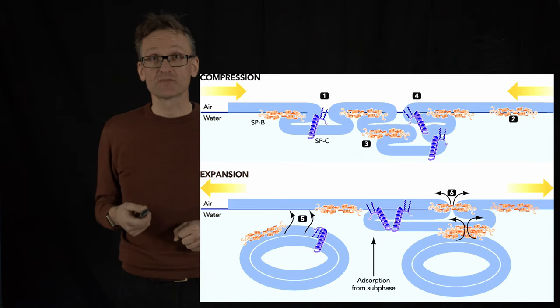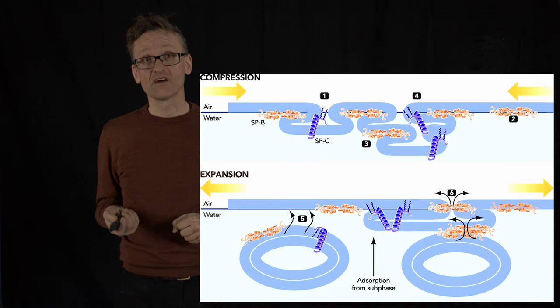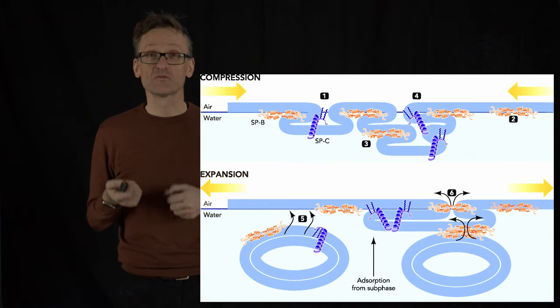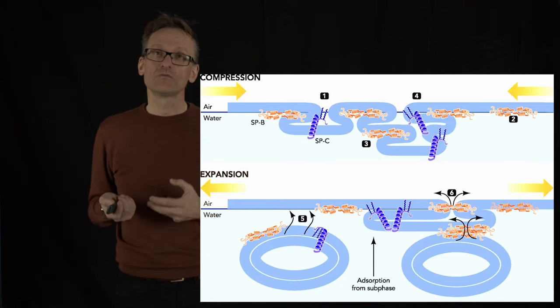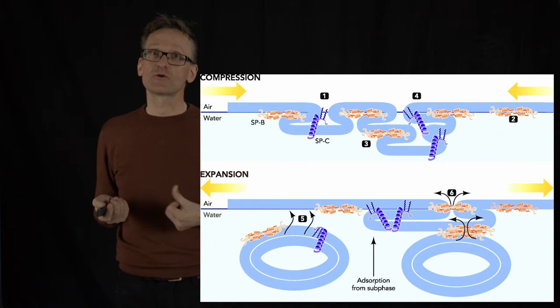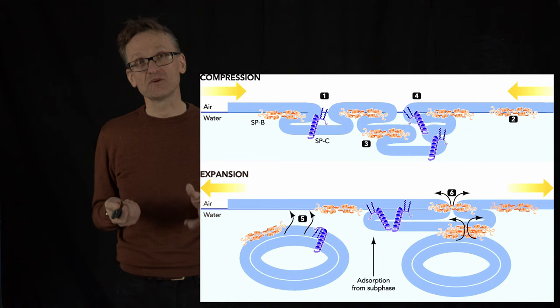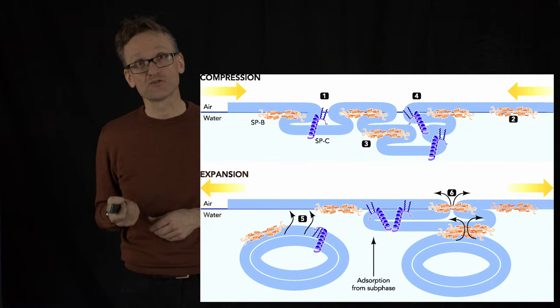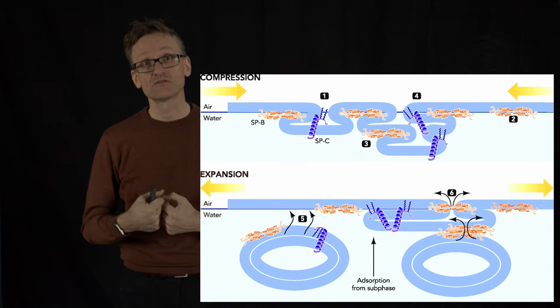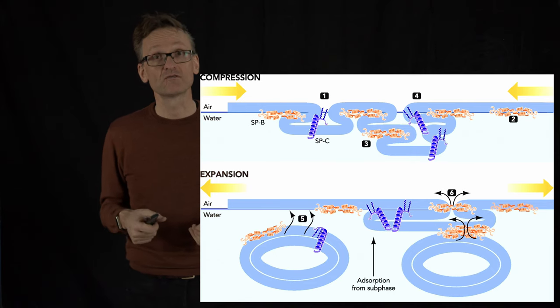This works when we're adults because a few weeks before we're born, we start expressing these proteins that are required for respiration. That is occasionally why you hit the baby on the bottom to make sure it takes its first breath. Taking that first breath is the first expansion that might require a bit of extra force.